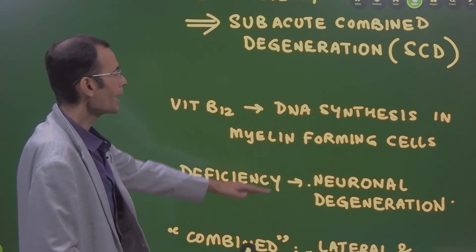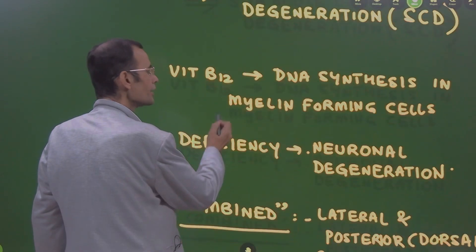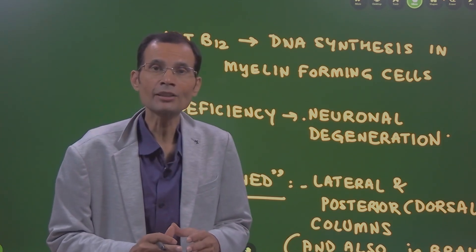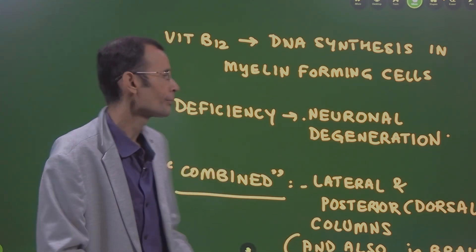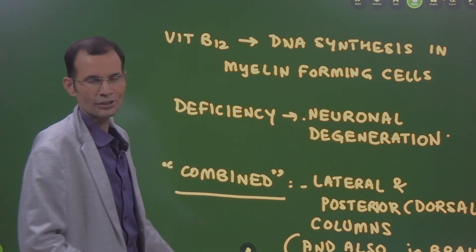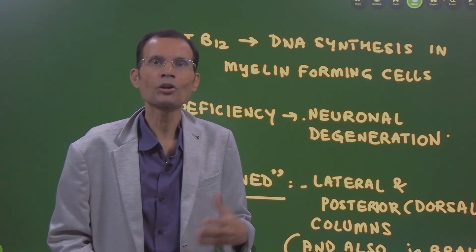So myelin formation will be deficient in the case of vitamin B12 deficiency or rather there would be myelin degeneration in the case of vitamin B12 deficiency resulting in neuronal degeneration.